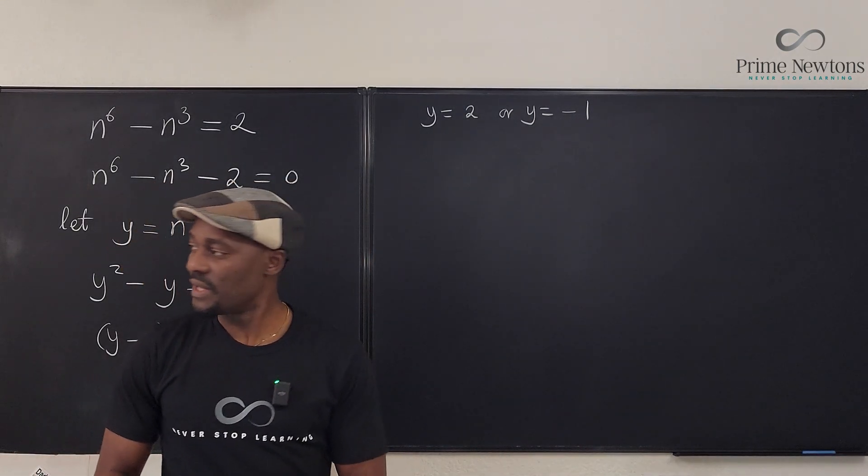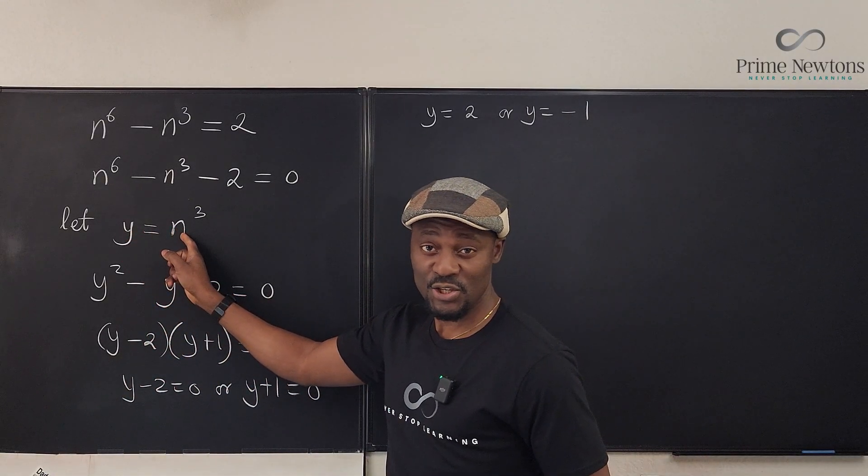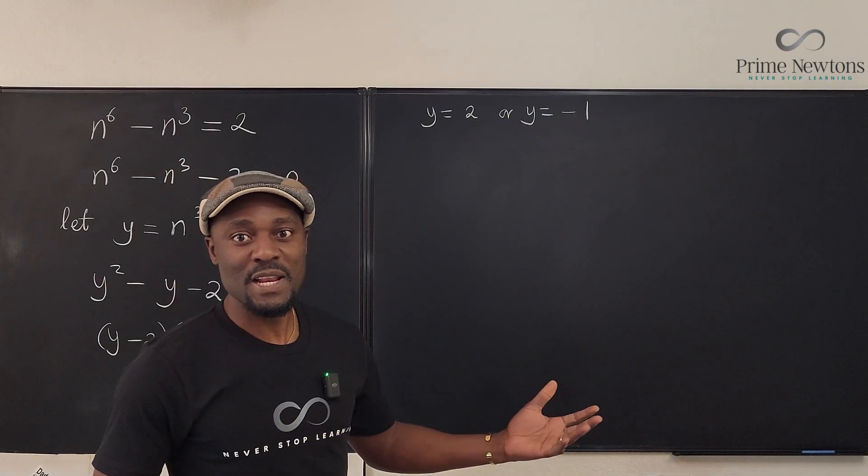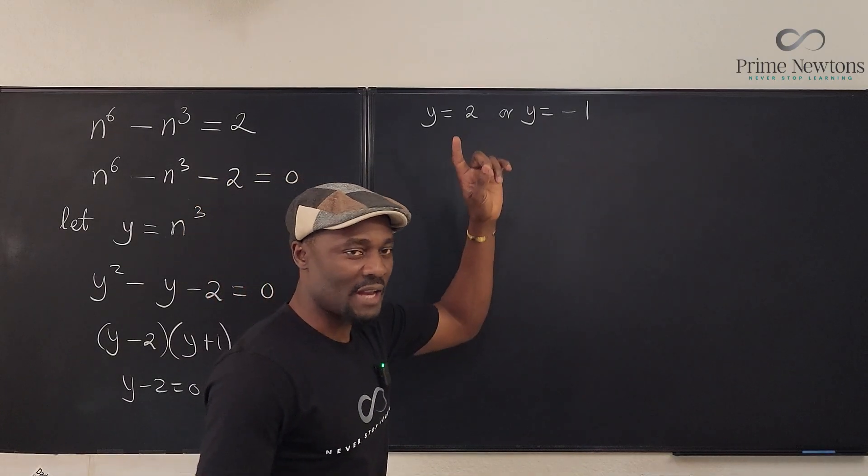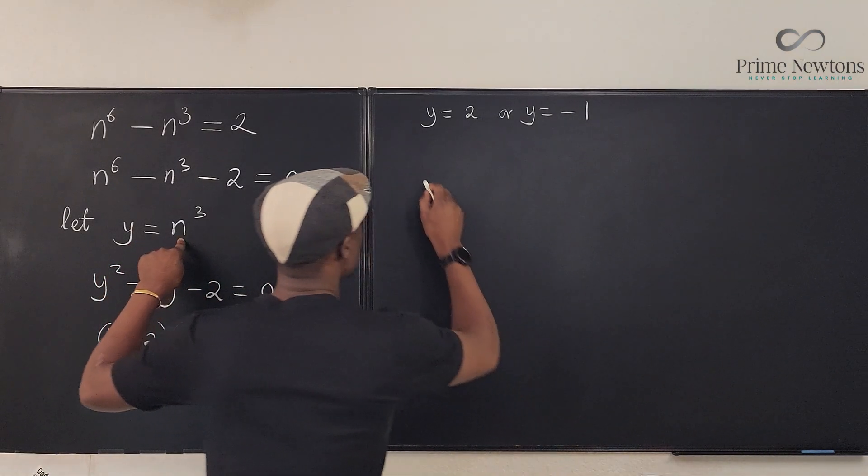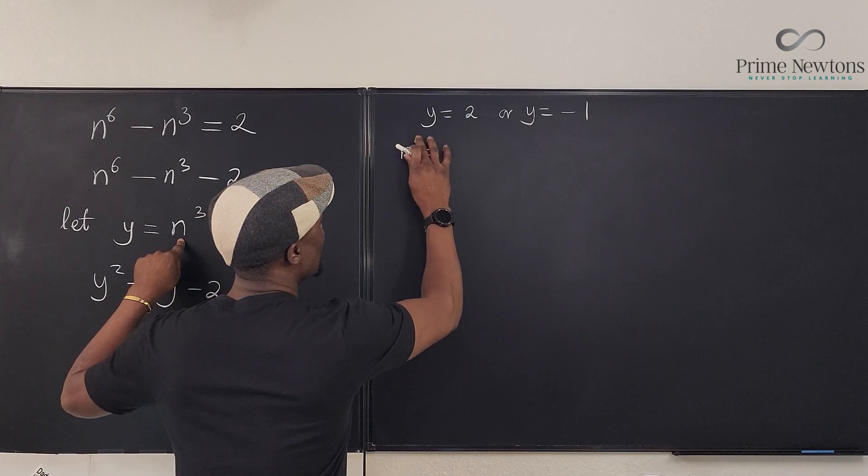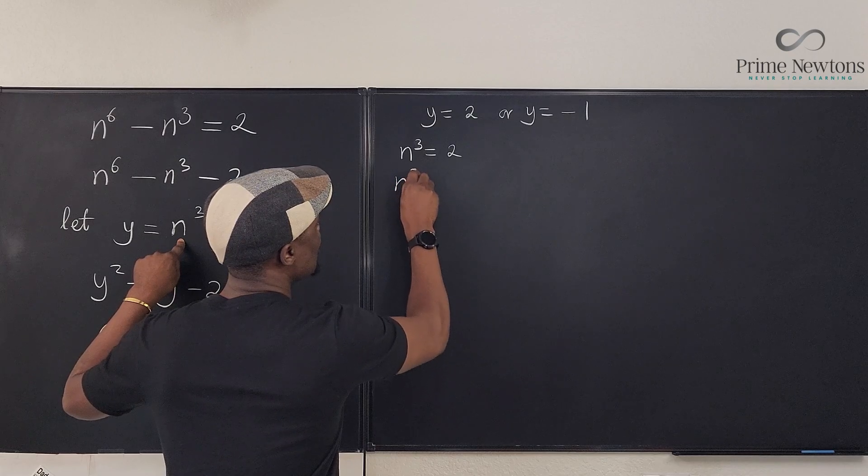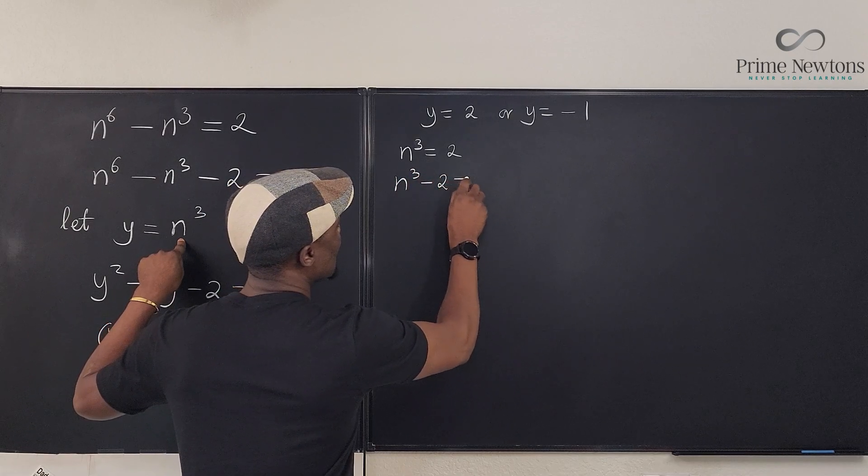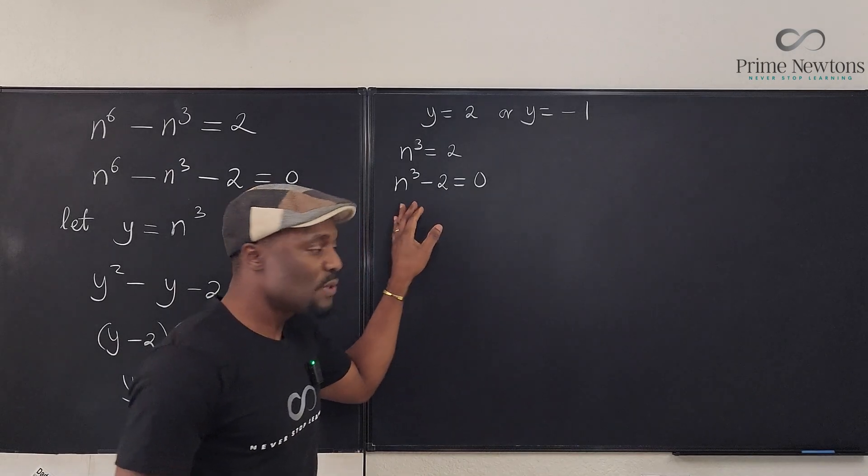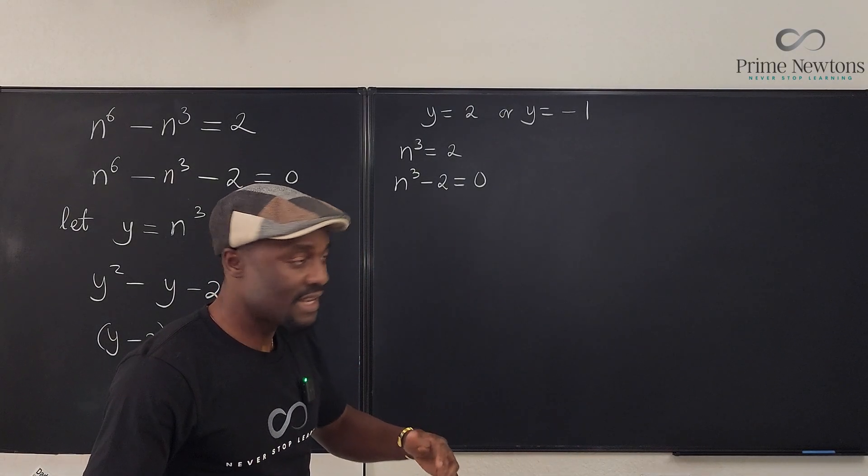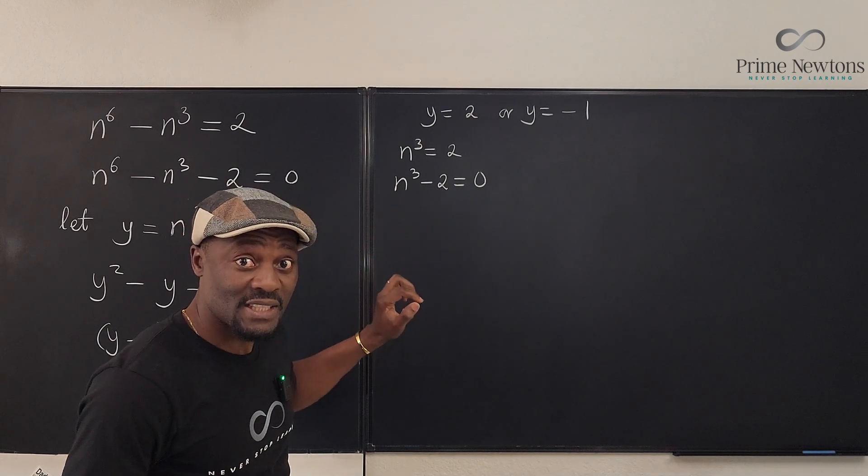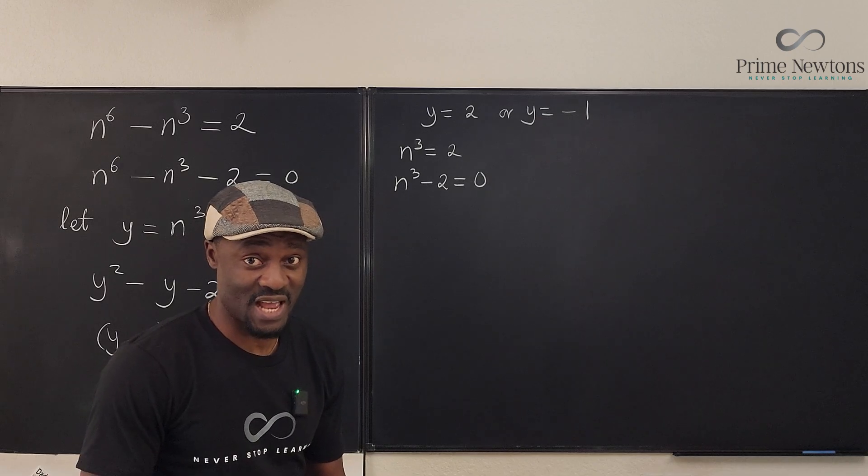So, what do we do with this? Remember, we made the substitution that y = n^3. And that's where the beauty of this whole thing shows up. Since y = n^3, we know that n^3 = 2, which means n^3 - 2 = 0. Now, how many solutions does this have? Because remember, we're trying to solve for n. This must have three solutions. Yeah, it doesn't look like it does, but it has three solutions, actually.